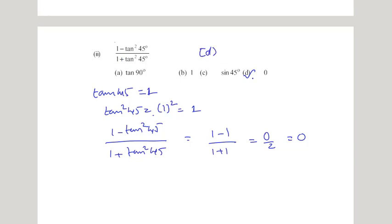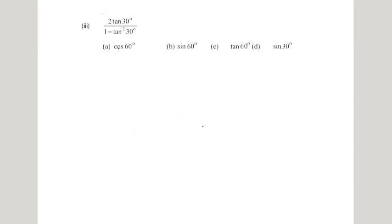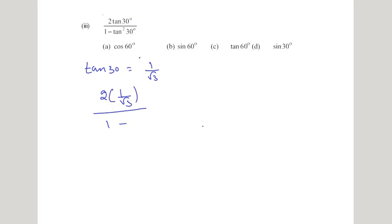Now the third question asks us to evaluate 2·tan30° / (1 - tan²30°). We know tan30° = 1/√3. Substituting: 2·(1/√3) divided by (1 - (1/√3)²).